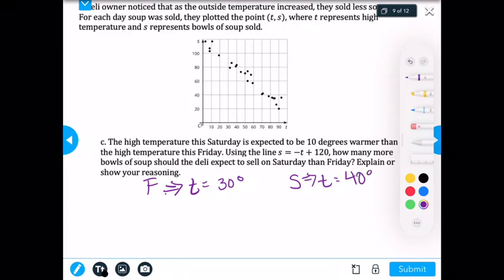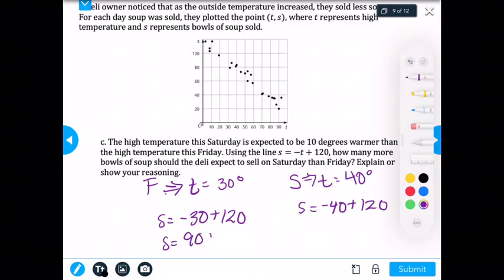So now let's plug those into our equation and see what happens. Right here, I have S = -30 + 120. And I have S = -40 + 120. S = 90 bowls. And S = 80 bowls.